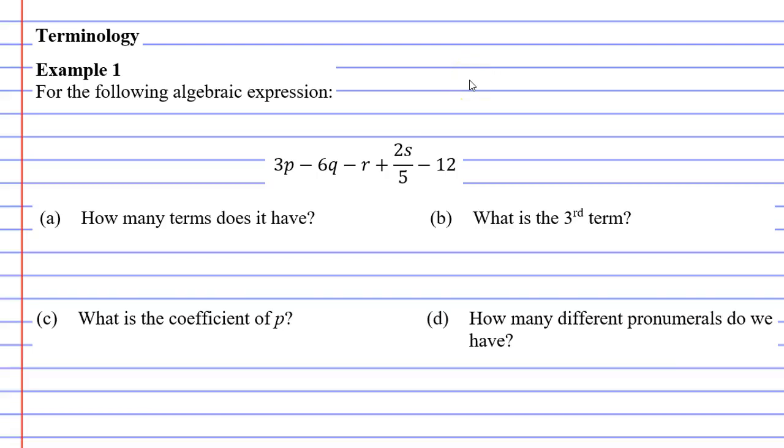In this video we're going to complete example 1 on terminology. We discussed a lot of this terminology in the previous video, so if you're struggling with this particular example then you probably need to go back and watch the previous video. Anyway, getting into the question, it says for the following algebraic expression, which we can see here, 3p minus 6q minus r plus 2s over 5 minus 12.